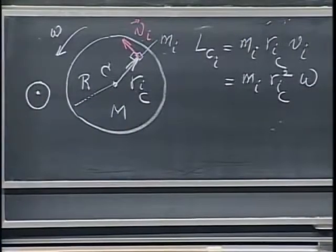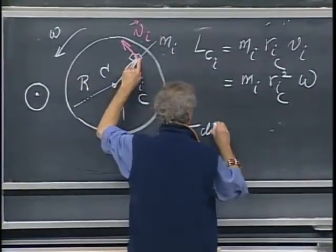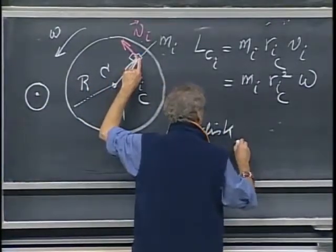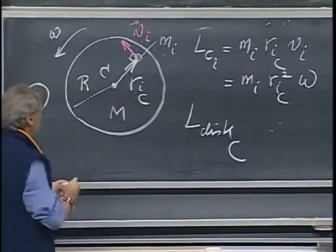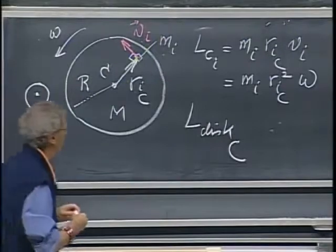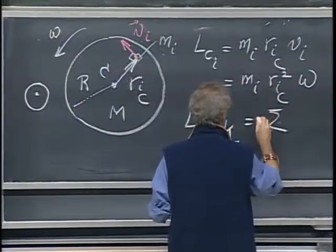So that is the angular momentum for this little mass element. But now I want to know what the entire angular momentum is about that point C. It's an axis going through the center of mass, through the center of the disk perpendicular to the blackboard. And now, of course, I have to do the summation of all these elements i.